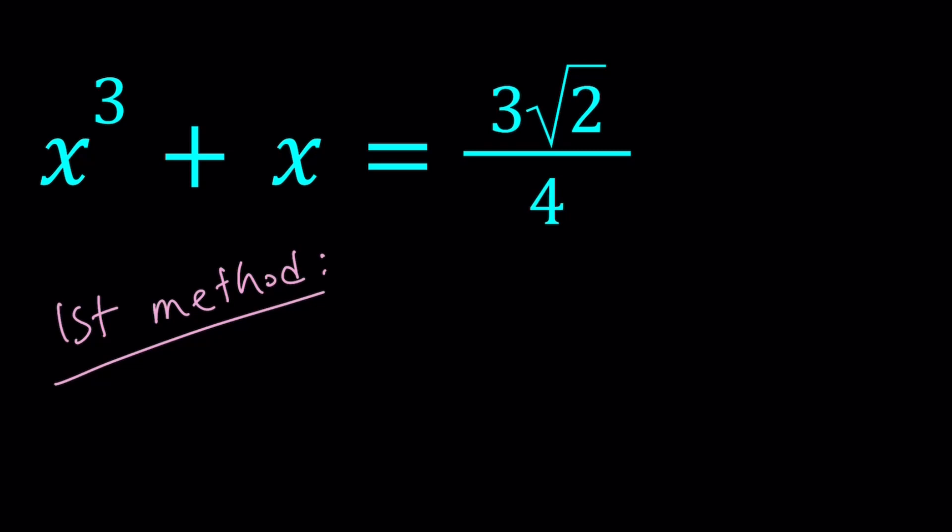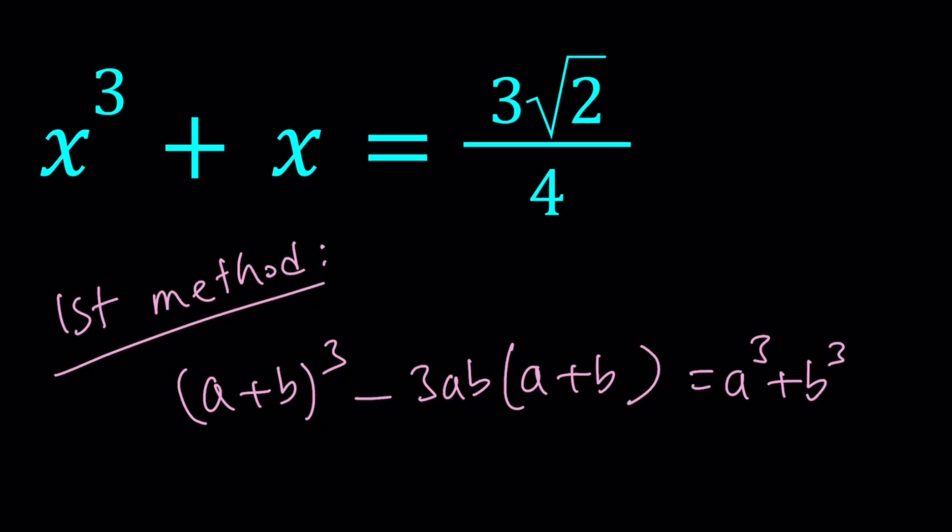So the cubic formula works like this. We write (a + b)³. And from that, we subtract 3ab times (a + b). And if you do that, you're going to get the binomial theorem with four terms. The middle terms are going to cancel out. And now we're going to end up with a³ + b³, which is the first and the last term.